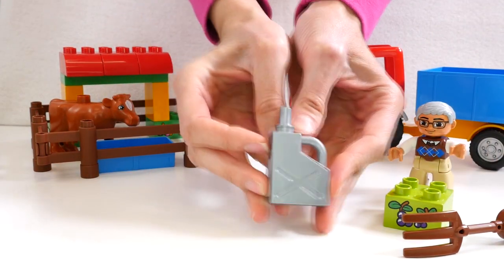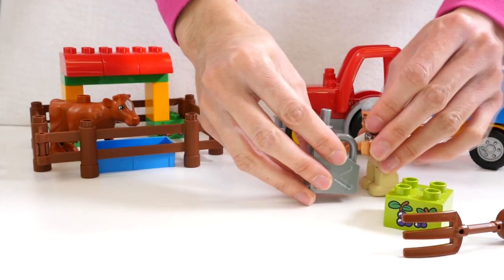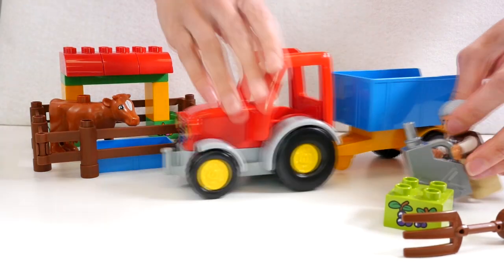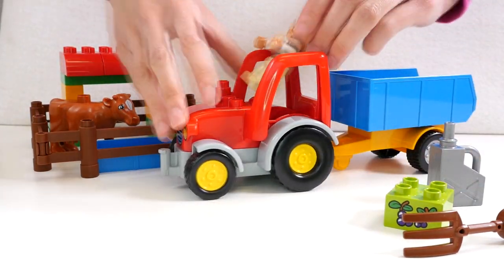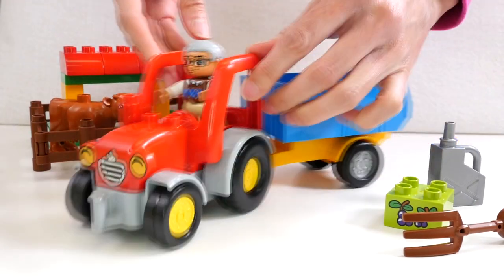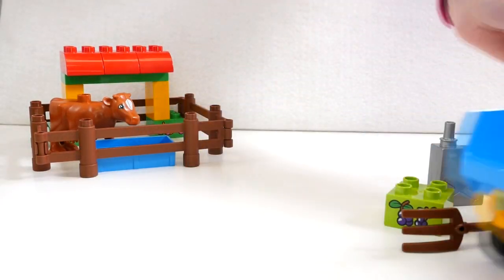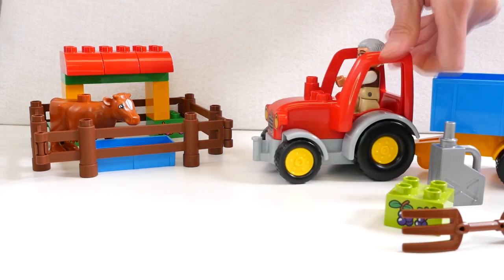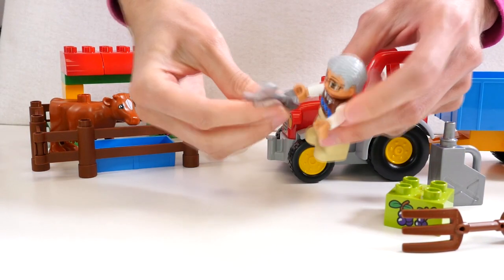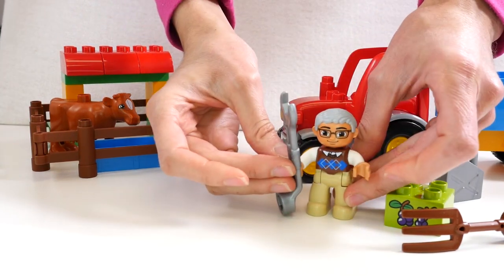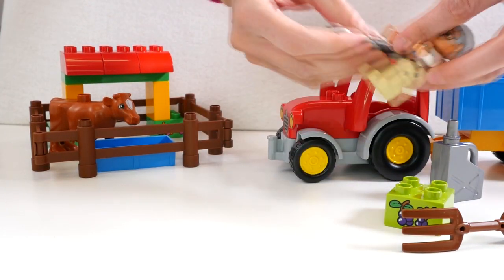And here's a gas tank so the farmer can fill up his tractor with gas. And then if it breaks down, the farmer's got a nice wrench here. And he can fix it.